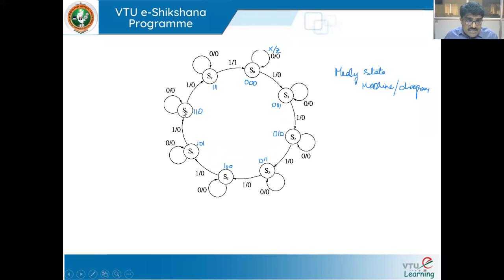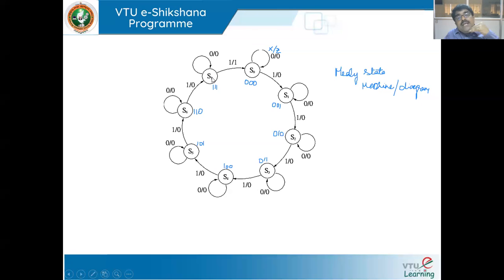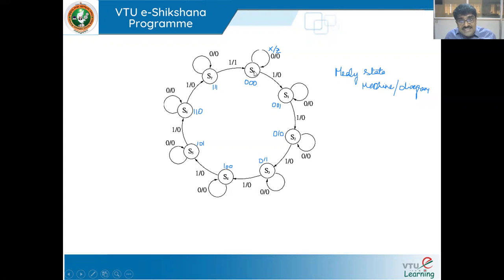If I'm in state S6 and X is zero, I remain in the same state with output zero. When X equals one, I move from S6 to S7, but output is still zero because I need to reach the last state first. After reaching S7, the next transition with X equal to one takes me back to S0, and only at that moment do I set Z equal to one — signaling one full count from 0 to 7 is complete.